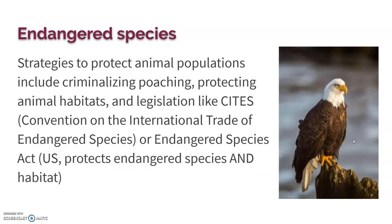Strategies to protect animal populations include criminalizing poaching, protecting animal habitats, and introducing legislation such as CITES and the Endangered Species Act. CITES stands for the Convention on International Trade of Endangered Species. It's an international agreement for countries to protect endangered species through their own individual legislation — not a global law, but a global agreement.